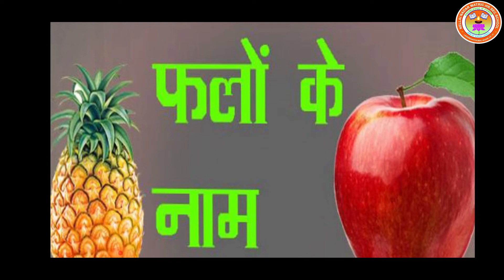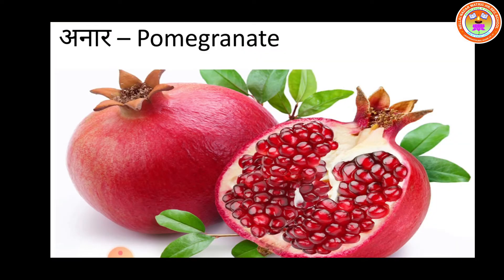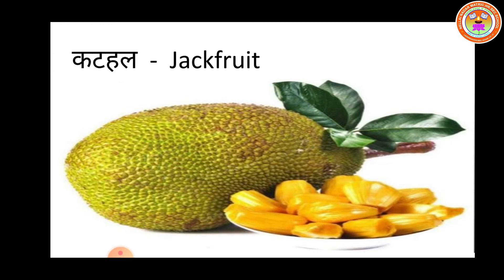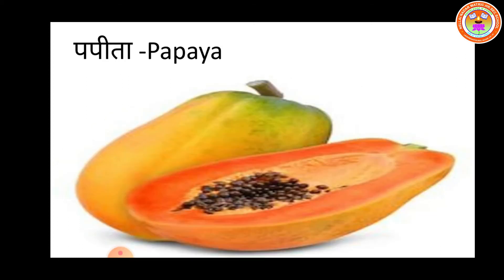Fruits name. Anar - Pomegranate. A-N-A-R. Anar, Pomegranate. P-O-M-E-G-R-A-N-A-T-E. Kela - Banana. K-E-L-A. B-A-N-A-N-A. Banana. Cutthal - Jackfruit. J-A-C-K-F-R-U-I-T. Jackfruit. Papita - Papaya. P-A-P-A-Y-A. Papaya.